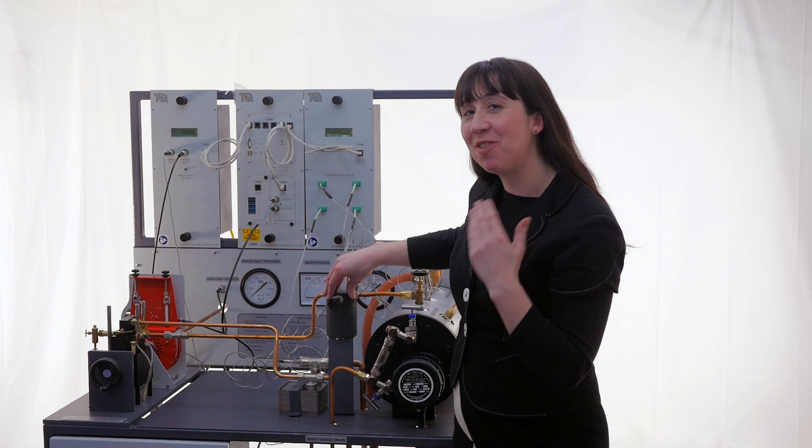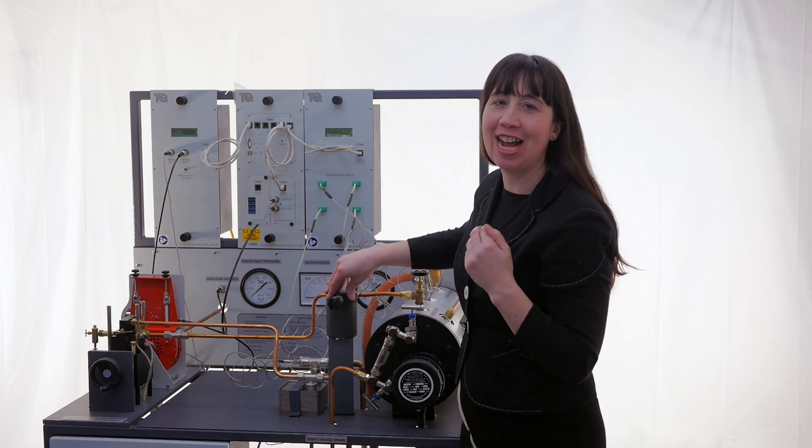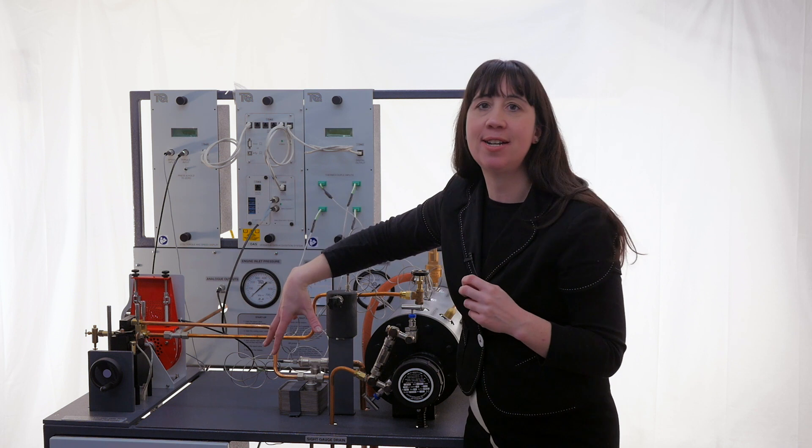When using the calorimeter here for dryness fraction testing, the outlet steam passes through the condenser. The condenser cools this steam so only water passes down to the waste tank.